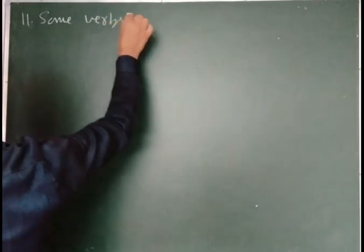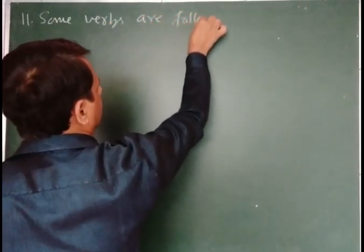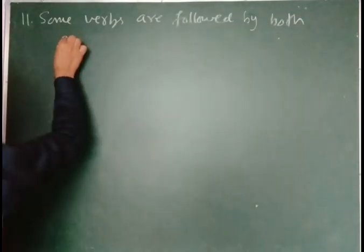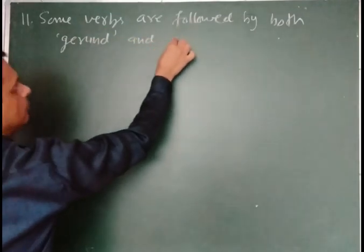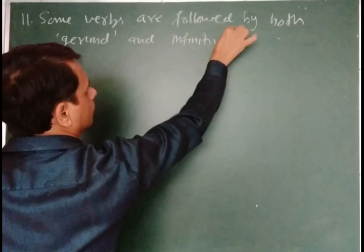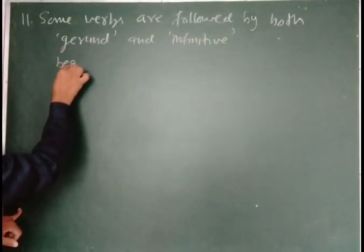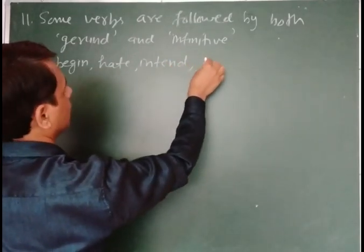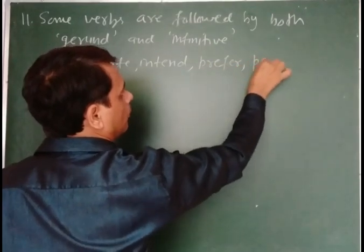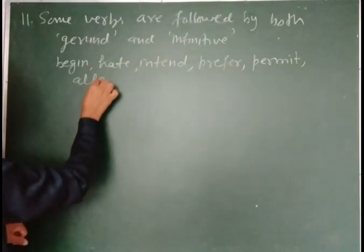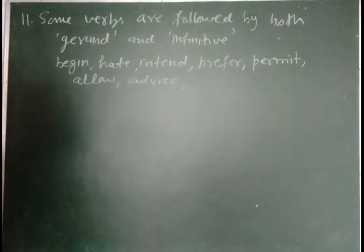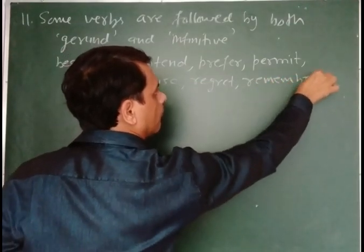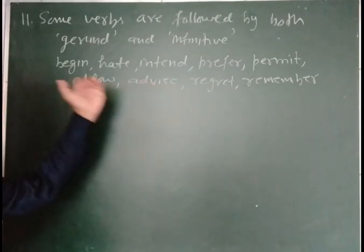Some verbs are followed by both gerund and infinitive. For example: begin, head, intend, prefer, permit, allow, advise, regret, remember. These verbs are followed by both gerund and infinitive.